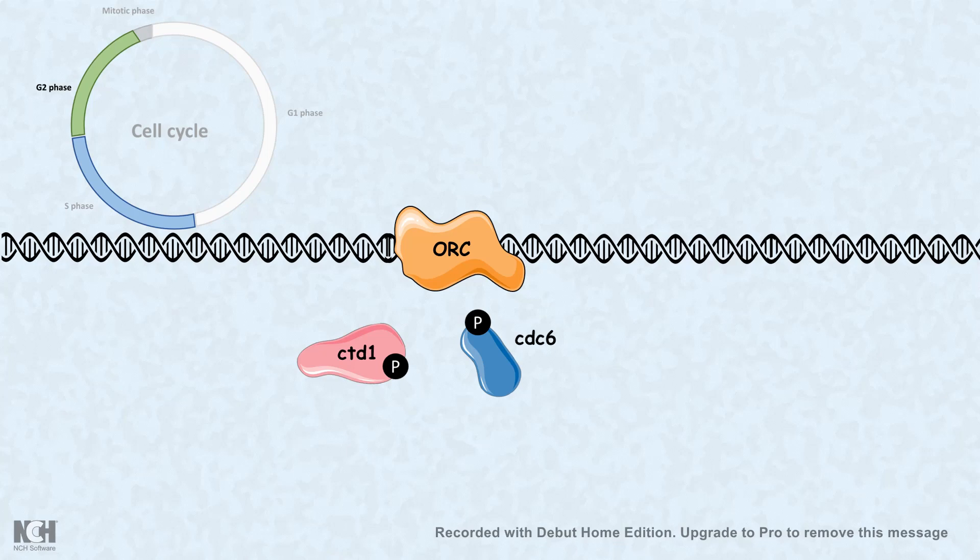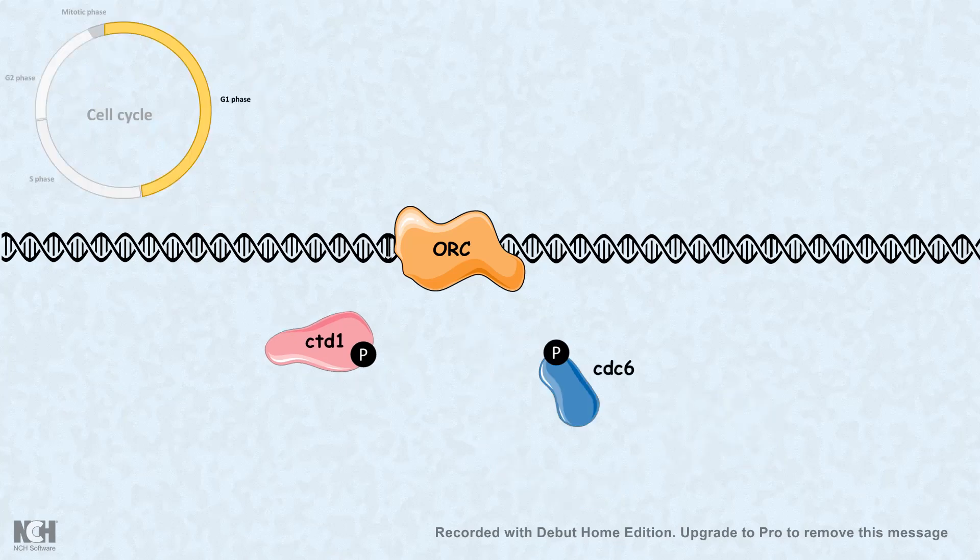And in this phosphorylated state, they cannot reattach to the ORC. And maturation-promoting factor actually maintains this phosphorylated state. And as a result, maturation-promoting factor can prevent these triggering factors to bind to ORC and re-initiate replication.